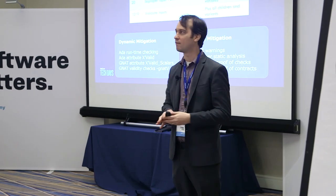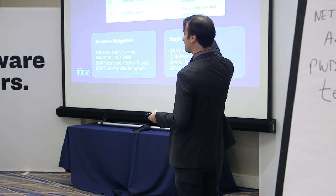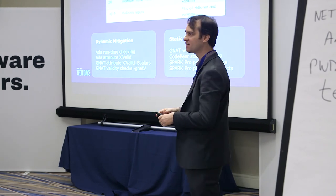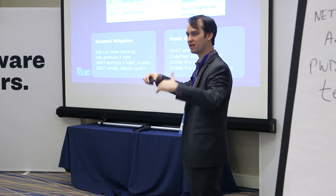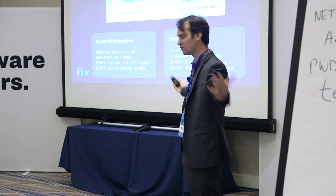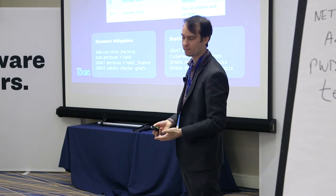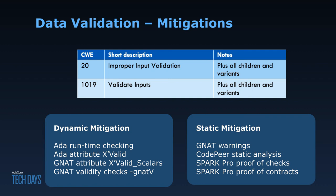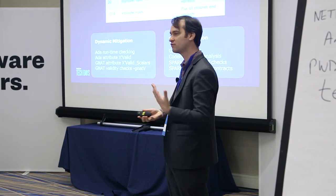Drilling down a bit on CWE — here's an example of things you might have to consider pertaining to input validation. The idea is that your software interacts with the outside world, and the outside world is sending data that might not be valid. Here you'll see a mix of dynamic and static mitigation methodologies available to you. The first one is runtime checking, which has been there since the very early days of Ada. At least for the testing phase it's quite useful to detect issues early on, though there is a runtime footprint impact so you might want to remove that after production.